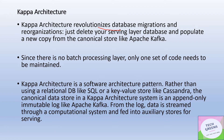Kappa architecture revolutionized database migration specifically. As data is fed into the streaming layer through append-only logs like Kafka, anytime you want to migrate to another system — say from dev to prod — you just populate new copies from the canonical store. You simply delete the serving layer database and repopulate it from the canonical store.